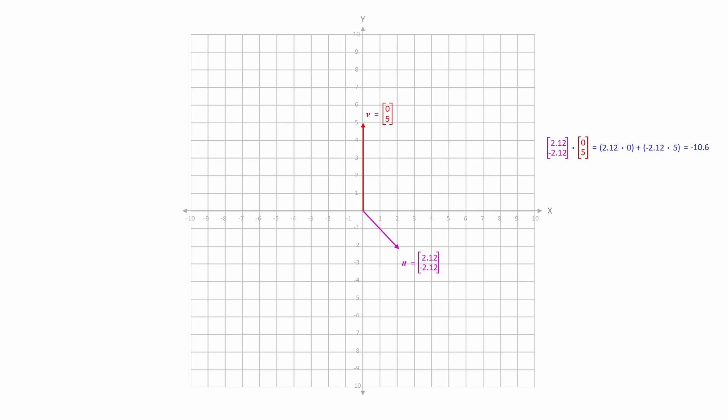If we continue to change the direction, the dot product continues to get smaller, but now it has a negative value, minus 10.6. And the value grows more negative as the angle between these two vectors gets even bigger. When the vectors are pointing in completely opposite directions, the dot product is minus 15. Remember, it was positive 15 when they pointed in the same direction.